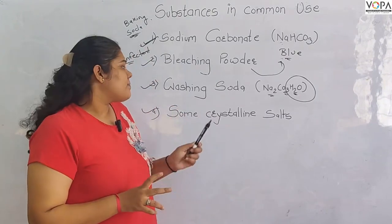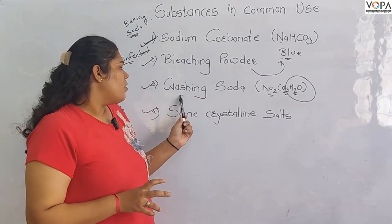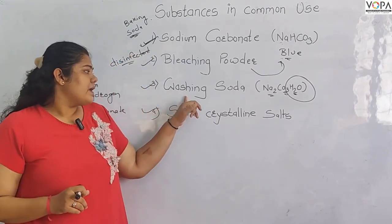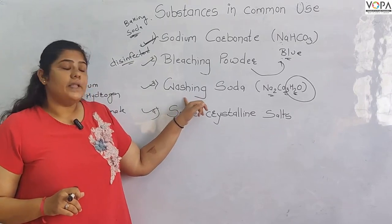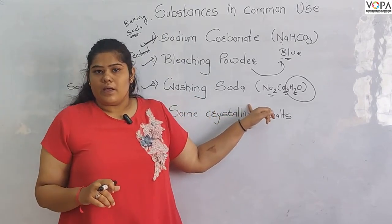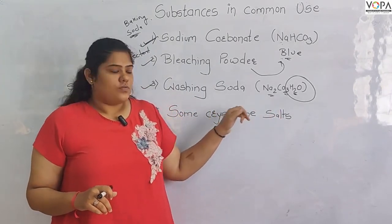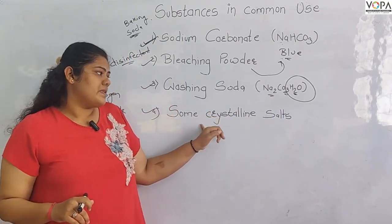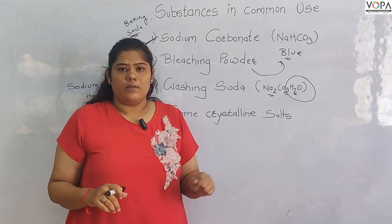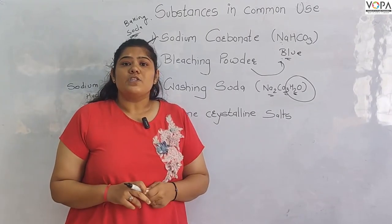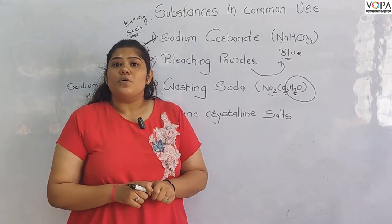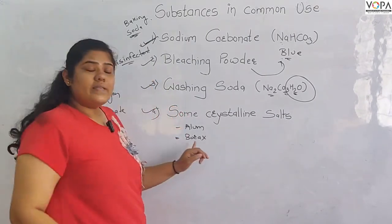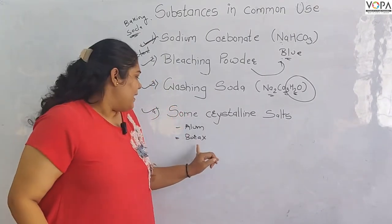So we need to clean water for daily use. We have to use these substances in daily use. We need some crystalline salt — for example, it is Alum.